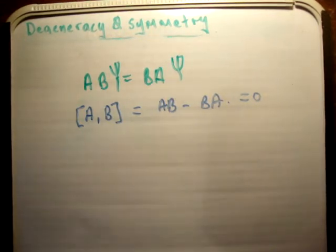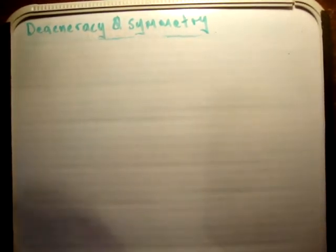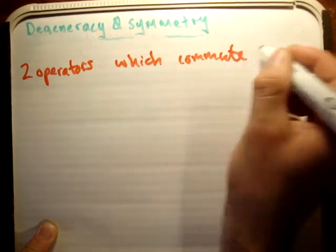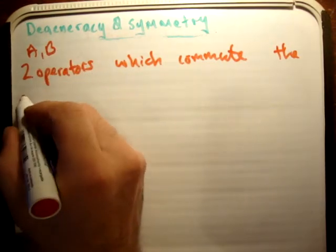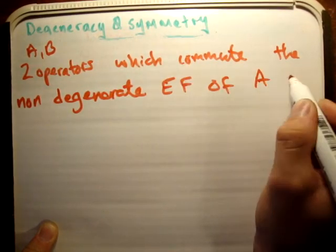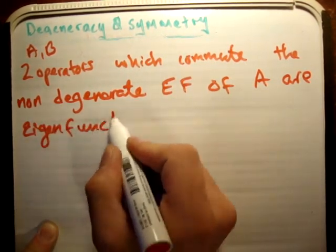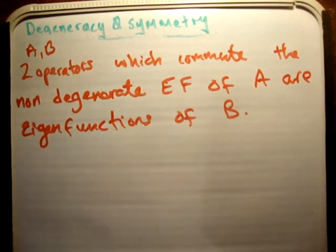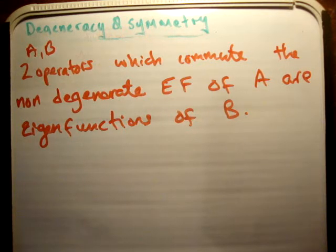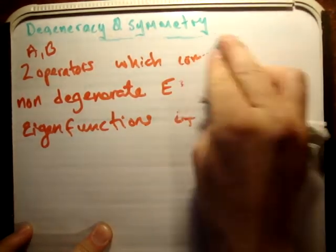Why is this important? Here is the key theorem: where you have two operators which commute, the non-degenerate eigenfunctions of A are eigenfunctions of B. To repeat: if I have two operators A and B and they commute — the commutator gives zero — then non-degenerate eigenfunctions of operator A are eigenfunctions of operator B. That's a very important theorem, and I'll use it to illustrate what follows.